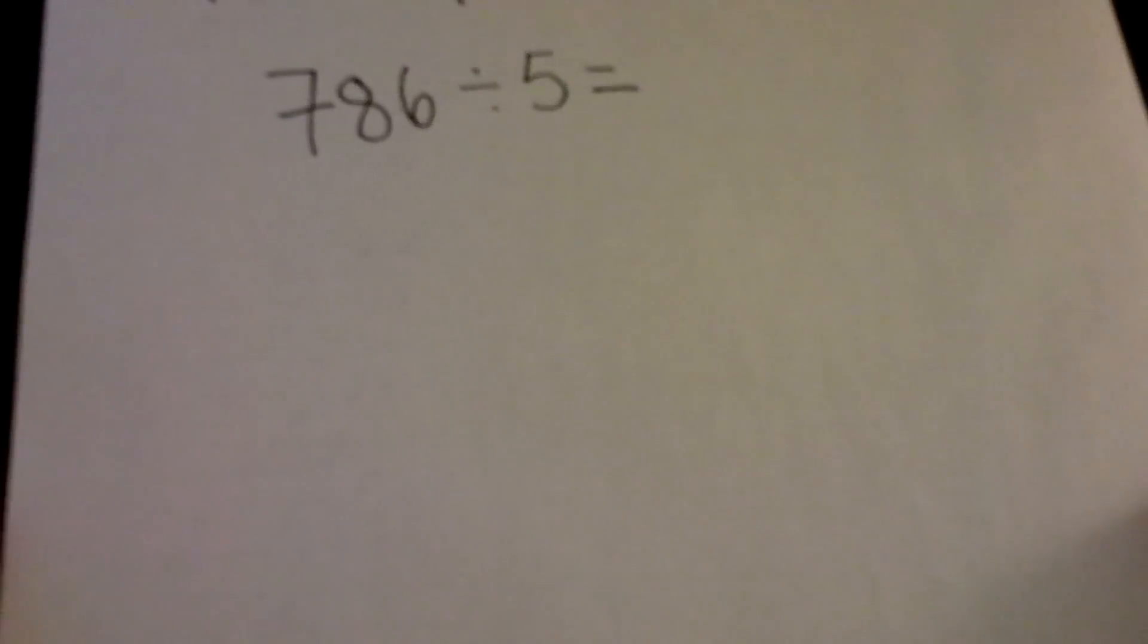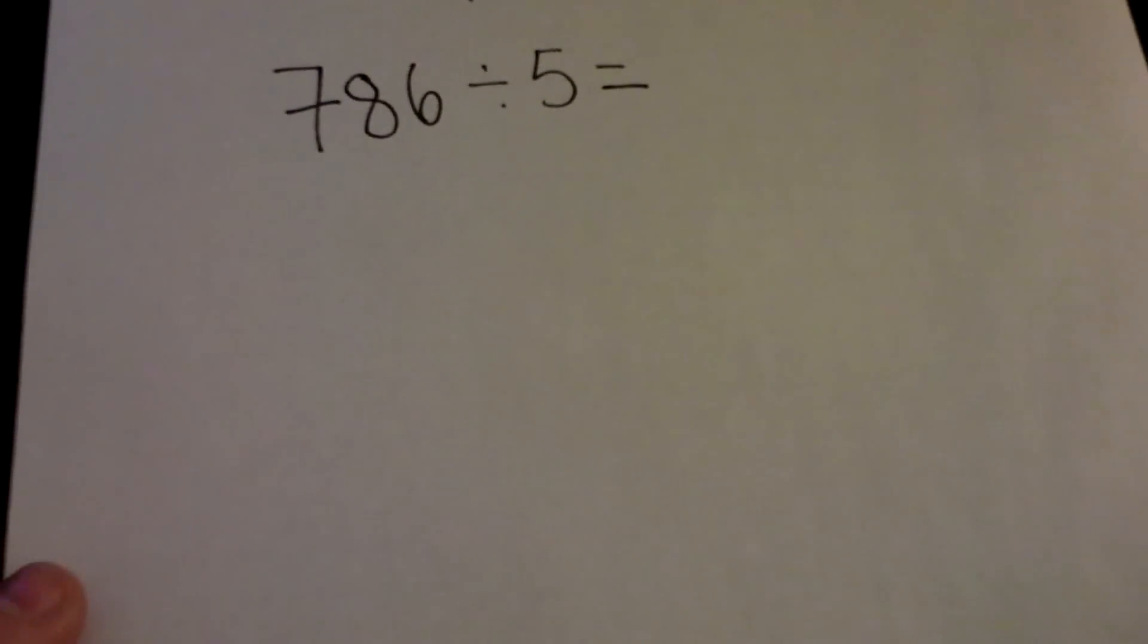Let's take a look at a problem here. Let's take a look at 786 divided by 5. Using the partial quotients algorithm, we're going to capitalize on a student's strength, their multiplication skills.